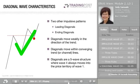Diagonal structures are also called diagonal triangles. Although similar, diagonal triangles are different from corrective triangles, which we will cover in Module 3, Corrective Patterns.